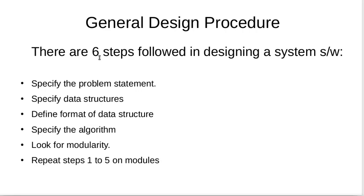Then we need to specify or decide on an algorithm that we will use. Then we need to look for modularity — that is, parts of the program or parts of the solution that we can reuse. Then we will repeat these steps time and again as long as the whole problem is not solved. These are the general design procedure steps for designing any system software.